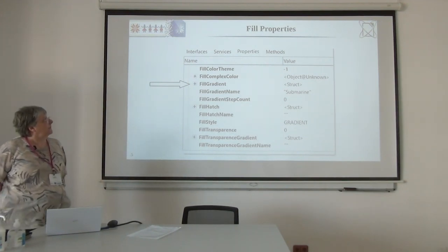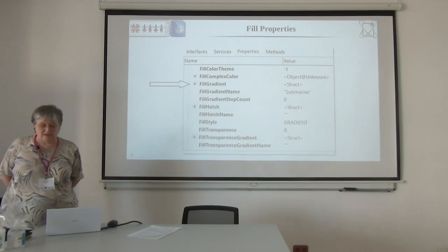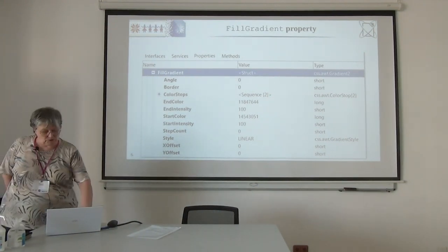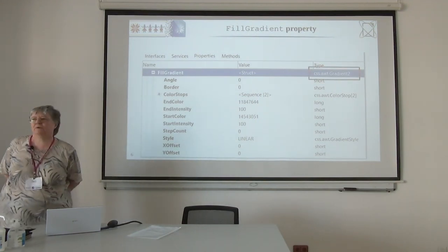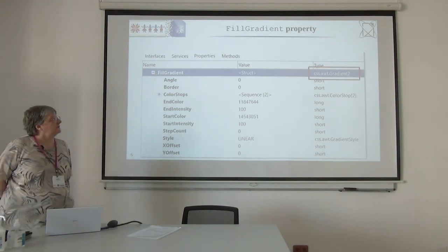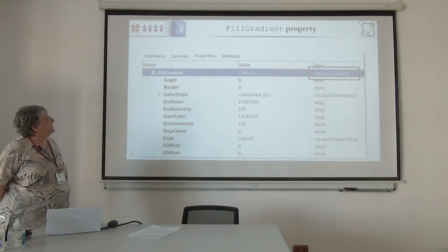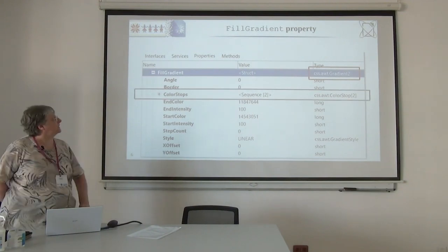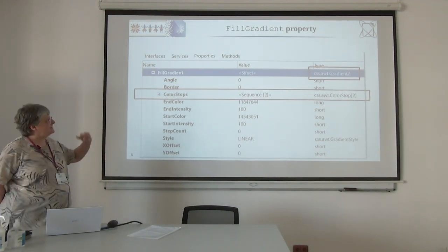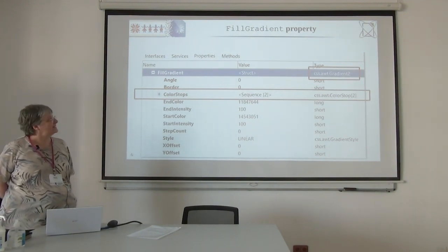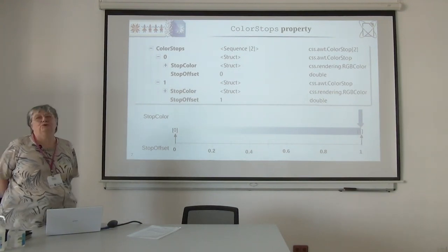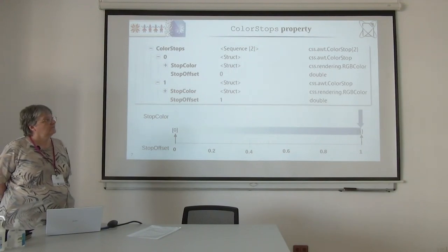Here we have the gradient definition itself, and when we open that we have the first difference: we have no longer a Gradient but now we have a Gradient2. Gradient2 is an extension to Gradient — we have a lot of properties already in Gradient, they stay the same, but we have got a new property: the color stops. The color stops is a sequence — note that it is plural — and each item is a color stop. When you expand it you see that a color stop is new too, a new part in the API.